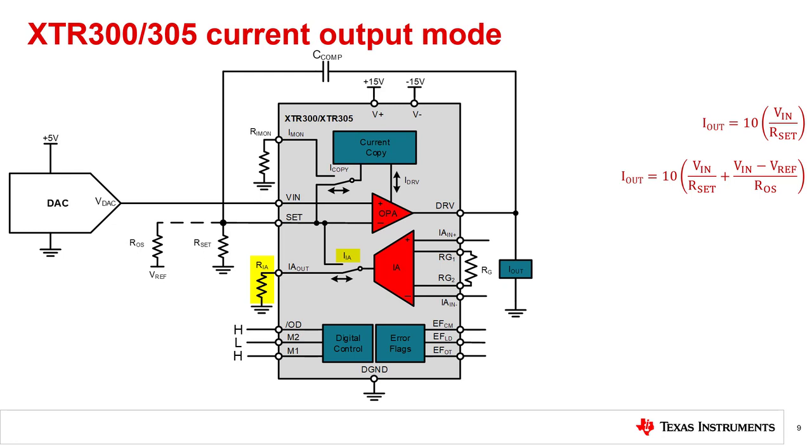A resistor, RIA, converts this current into a voltage. This arrangement makes level shifting easy. The next slide will describe the voltage operation mode. The voltage operation mode of the XTR300 and 305 utilizes the on-chip instrumentation amplifier of the XTR. The digital control pins M1 and M2 are both set to low. The feedback loop through the IA provides high impedance remote sensing of the voltage at the destination, compensating the resistance of a protection circuit, switches, wiring, and connector resistance.